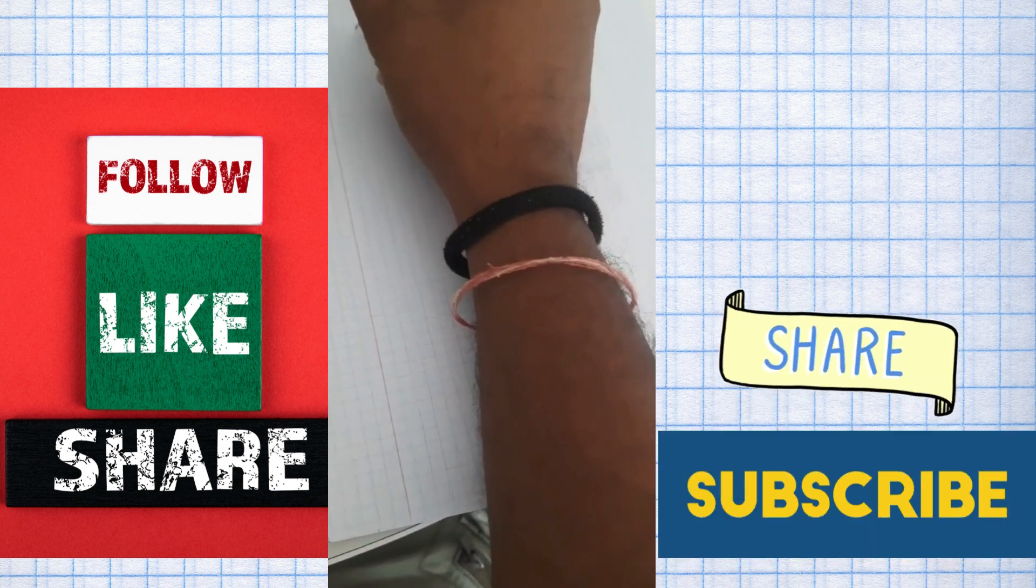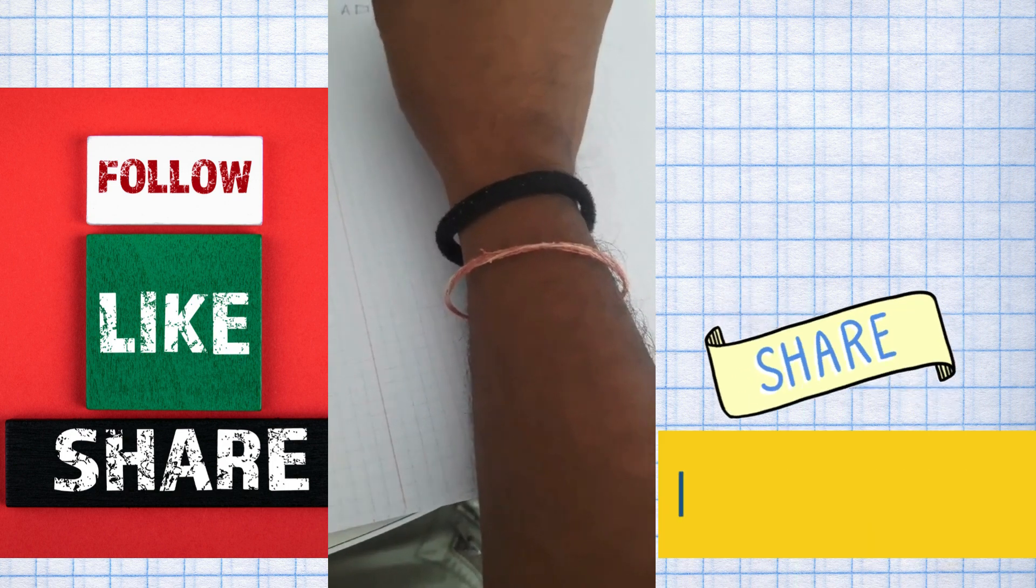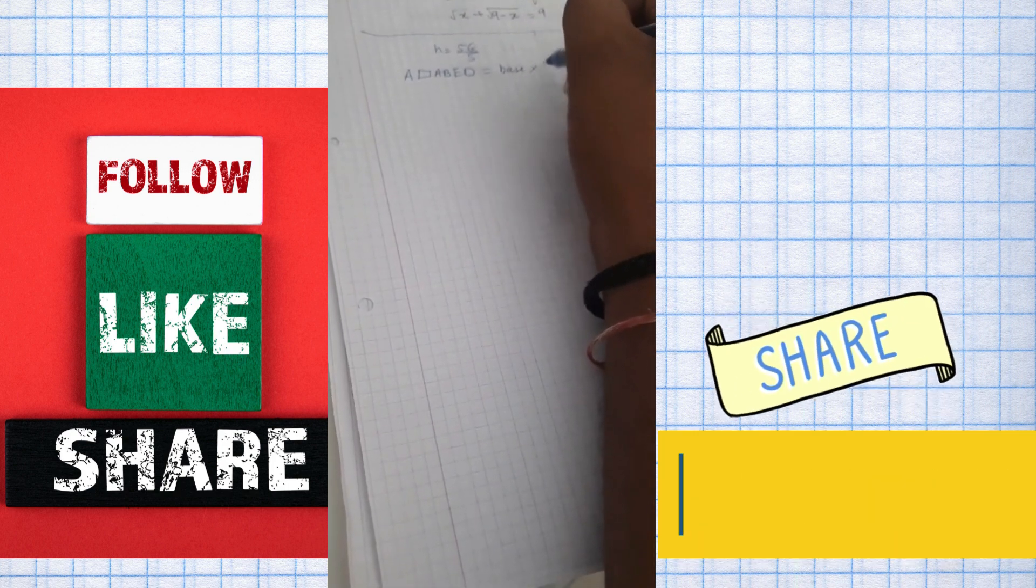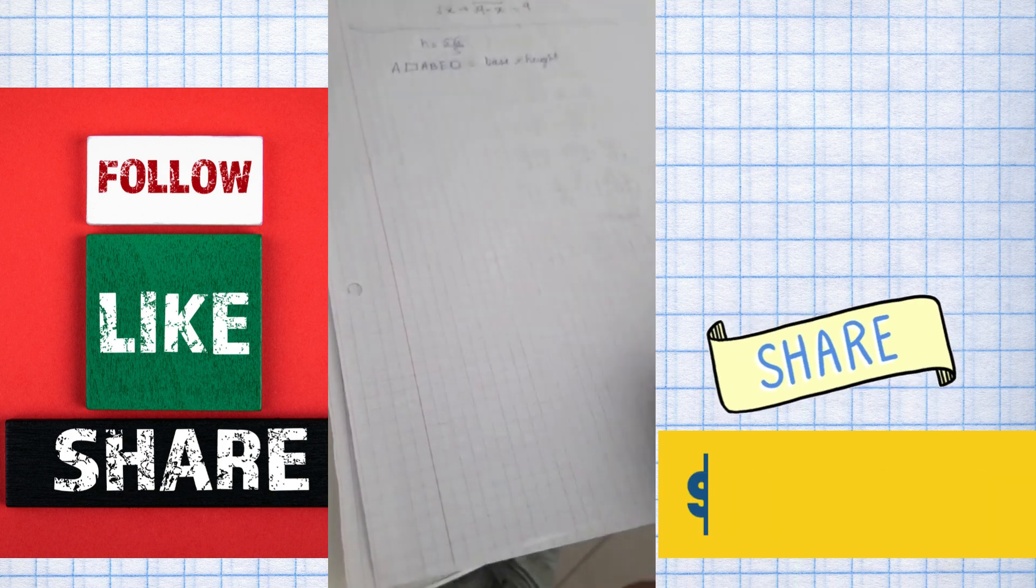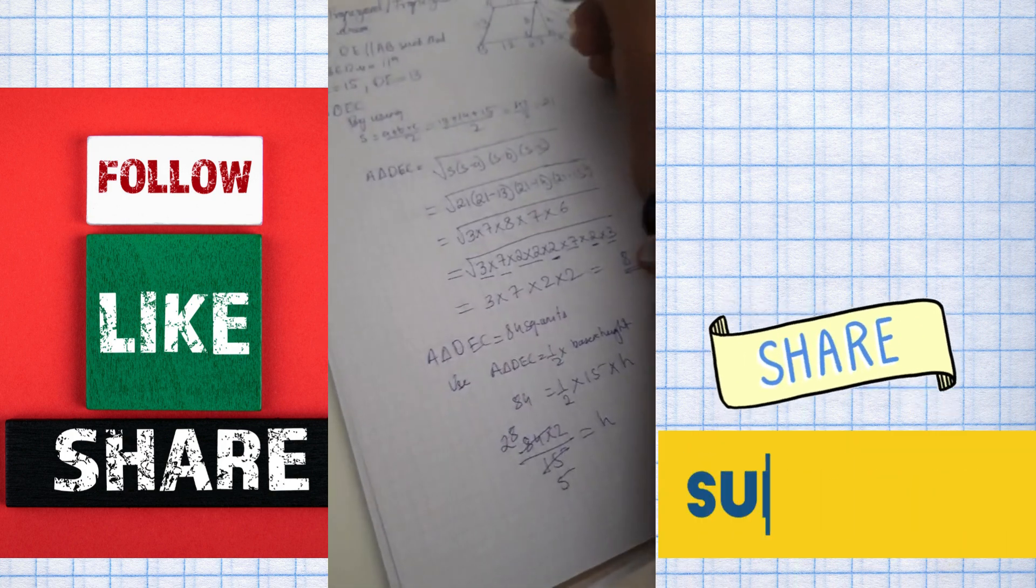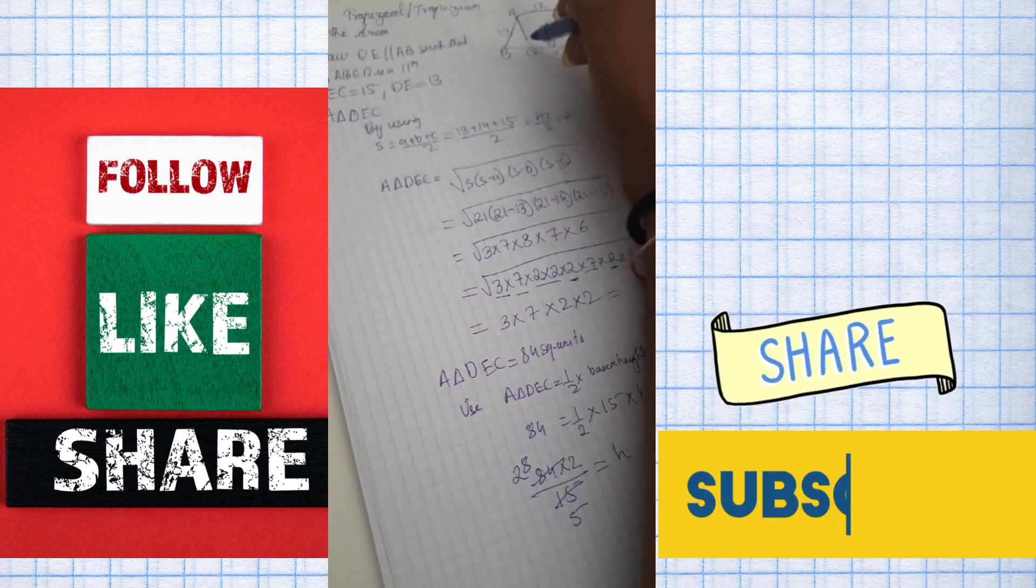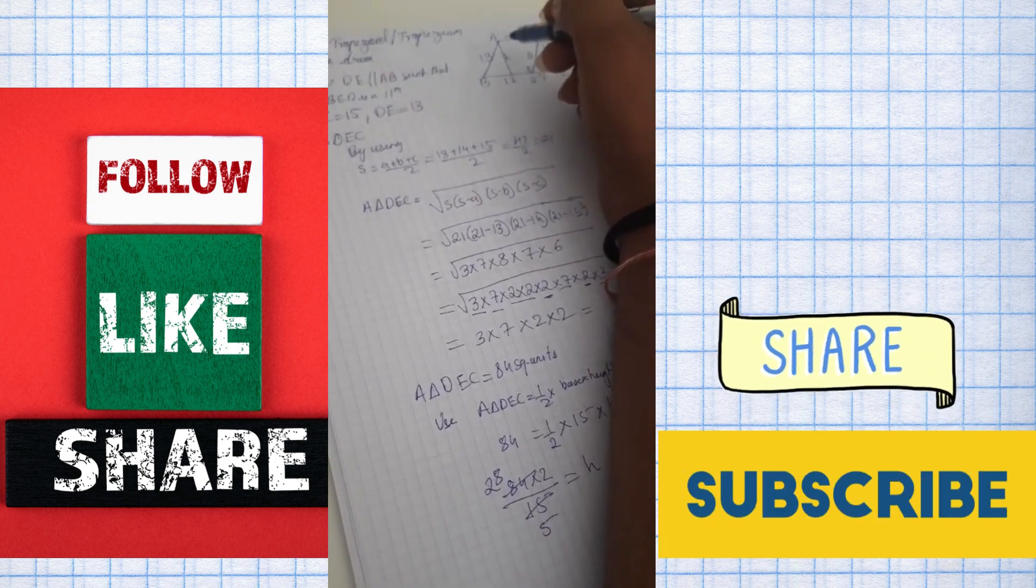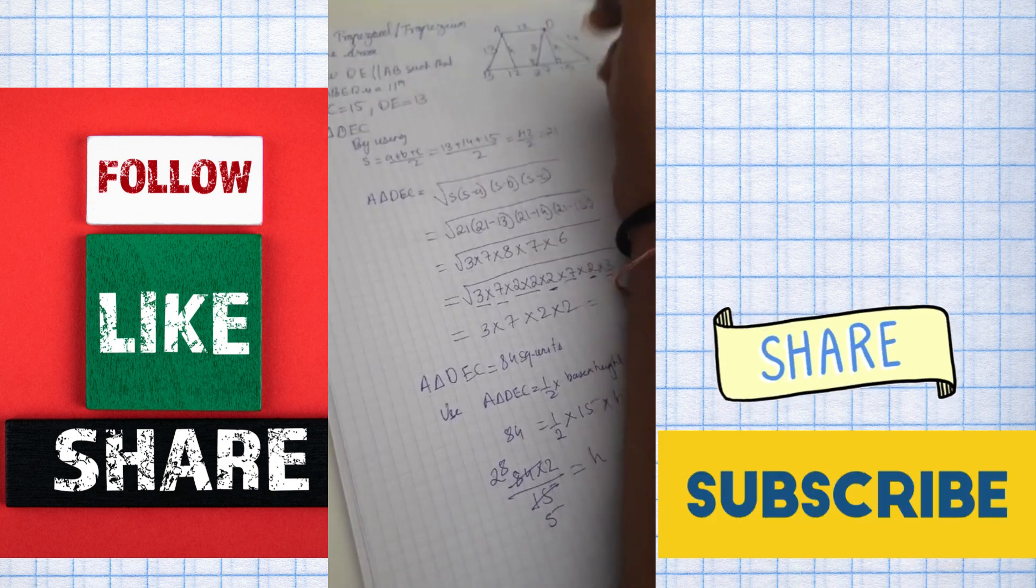And we'll continue over here. So we got H equal to 56 by 5. Now go for area of parallelogram A, B, E and D, which is equal to base into height. As you can understand, this is the height. You can draw the same height over here. Since these two lines are parallel, the height will be same.